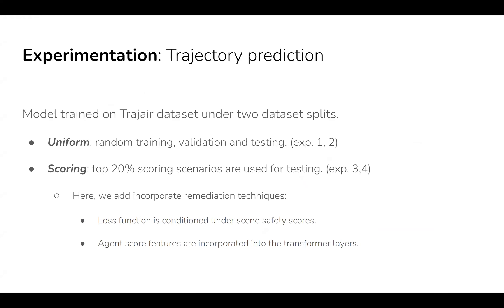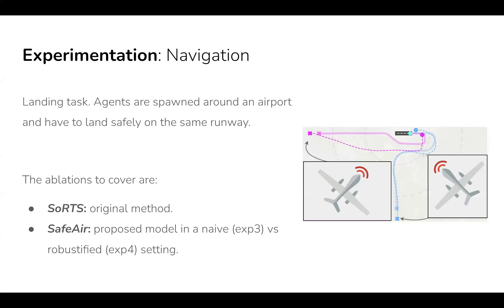Experimental setup: for trajectory prediction, we use two dataset splits — uniform, where a random training, validation, and testing split is used; and scoring, where the top 20% scoring scenarios are used for testing, and then we incorporate the remediation techniques. For navigation, it is a landing task where agents are spawned around an airport and have to land safely on the same runway. The ablations cover ESORT and SAFER, where there is a safety-naive model and a model with the remediation techniques applied.